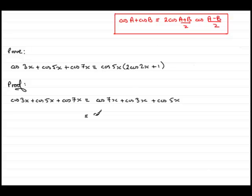then this is going to be the same as 2 cos of the sum of the two angles, 7x plus 3x, but divided by 2, times the difference, the cosine of the difference between them, 7x minus 3x divided by 2. Then I've got the last term here, plus cos 5x.